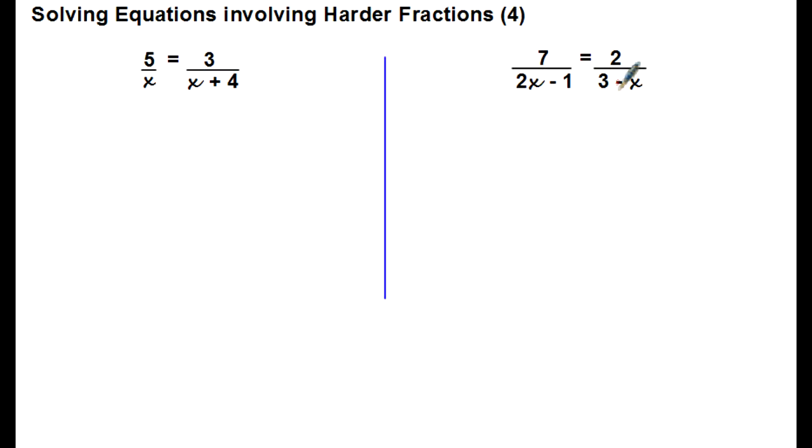You can see that each denominator is involving x, and three of them are linear functions of x. What we do is multiply both sides by the product of the denominators. So the product of the denominators in the first example is x times x plus 4. So that's what we're going to multiply both sides of the equation by.